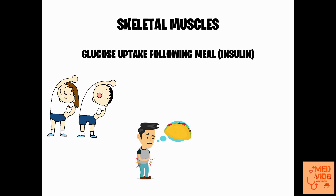This alanine is taken up by the liver, and the liver produces glucose from this amino acid. This process is called gluconeogenesis.